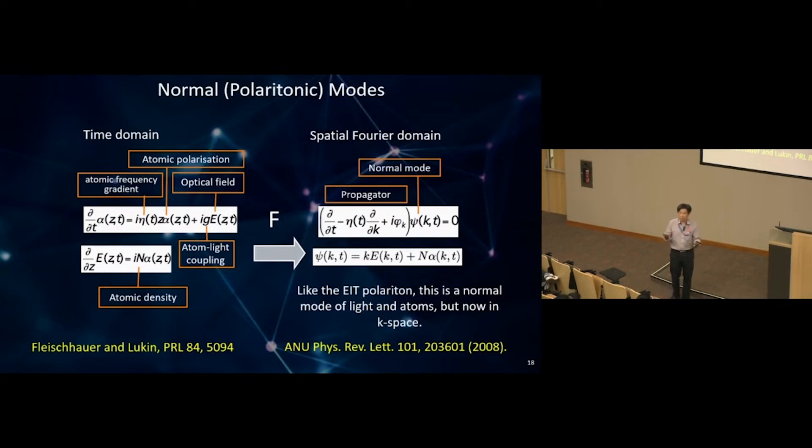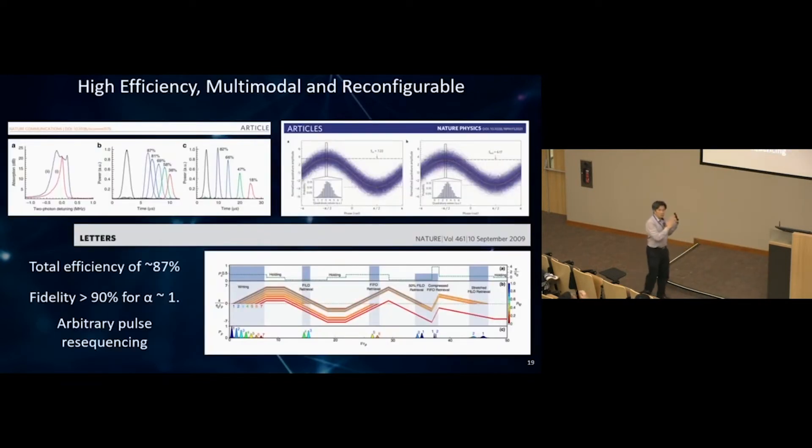If you look at the equation of interaction, it's described by the Maxwell-Bloch equation. It has atomic coherence, electric field, all the parameters, and most importantly, the atomic frequency gradient, the linearly increasing gradient field. If you take away the linearly increasing gradient, Fleischhauer and Lukin said in some regime you can calculate polaritons appearing. This polariton is the linear combination of optical excitation and atomic coherence.